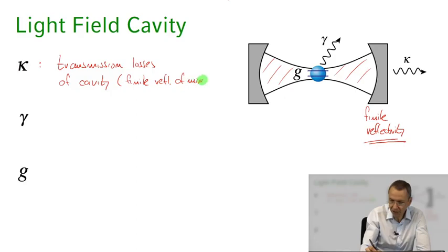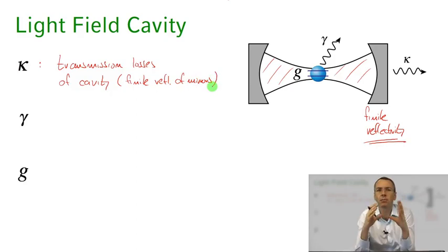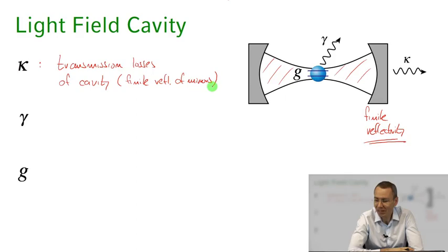In order to keep those transmission losses as low as possible, you want to use the best possible mirrors you can afford, achieving reflectivity as high as possible within current technical limitations.